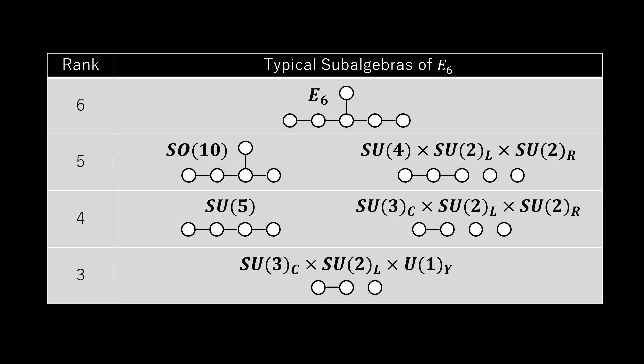Dynkin diagrams are a graphic way to summarize the roots of a Lie algebra. This figure shows the typical E6 algebra's role in Grand Unified Theories.